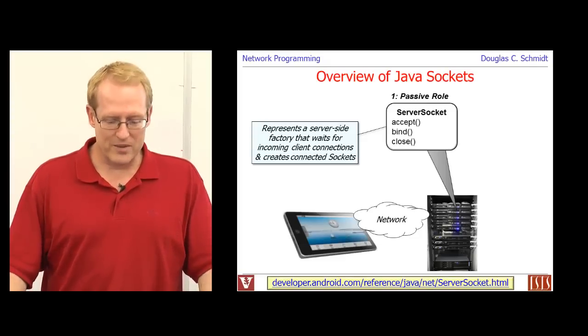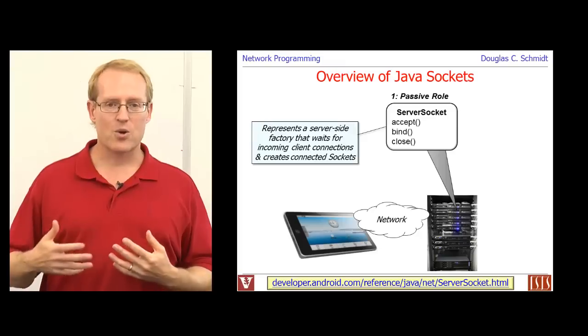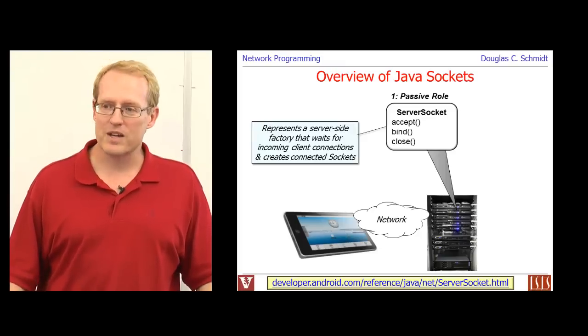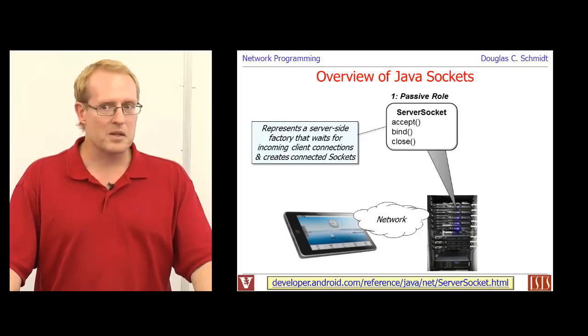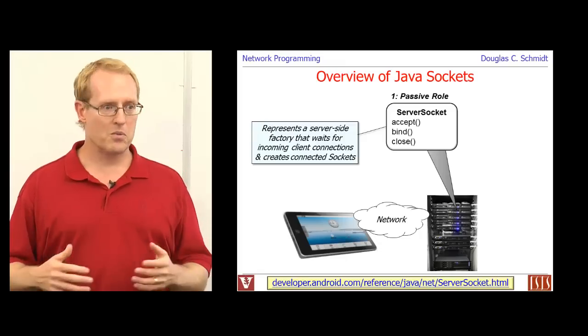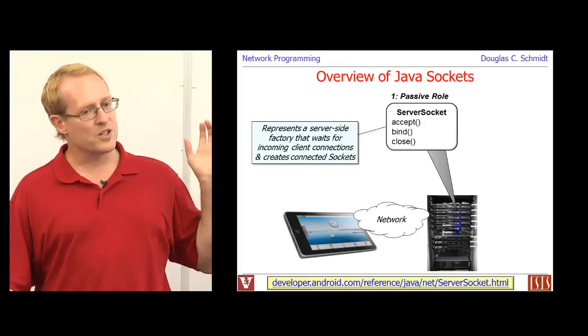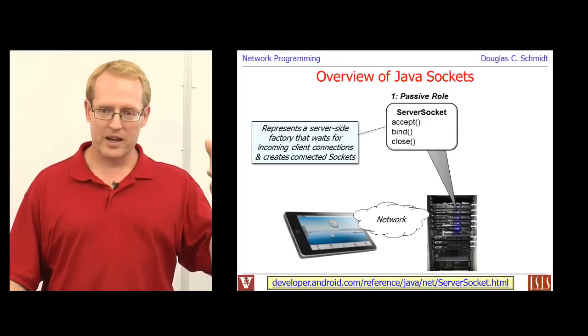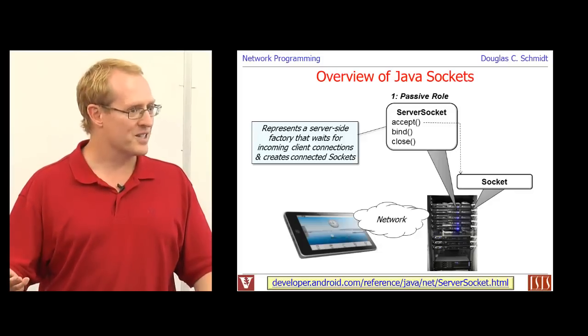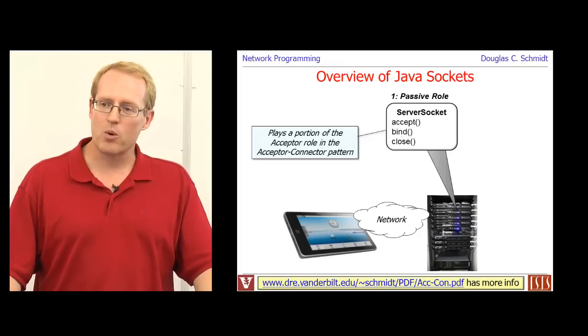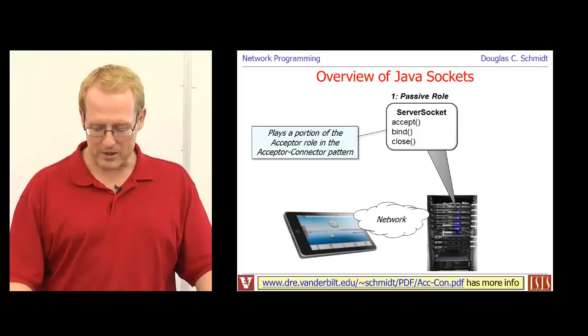Okay, so let's talk a little bit about Java sockets. So there's a bunch of different pieces to a Java socket. There are three primary roles that are worth distinguishing. The most core thing is something that's called a server socket. This is used to wait passively for someone to connect to you. It basically represents a so-called server side factory that waits for clients to connect to the server at a particular port number, at a particular IP address, and it works as a factory that creates a connected socket. And we'll talk more about what a socket is in a second. It's also worth noting that a server socket plays a portion of the acceptor role in the so-called acceptor connector pattern. We'll talk a bit more about that later. That was a pattern that appeared in the POSA 2 book.